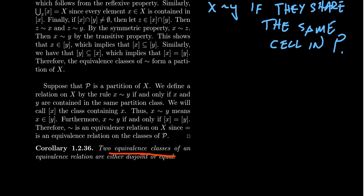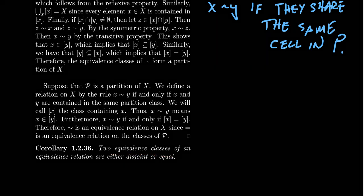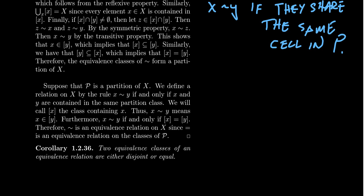So two equivalence classes on an equivalence relationship are either disjoint or equal — an important consequence of this statement. The one thing to take from this video is that equivalence relationships and partitions are one and the same thing. If we define a partition, we have an equivalence relationship. If we have an equivalence relationship, we have a partition. The two things are inseparable.